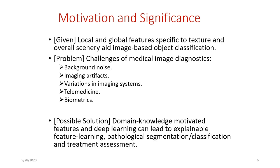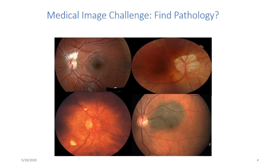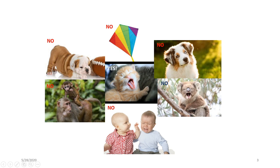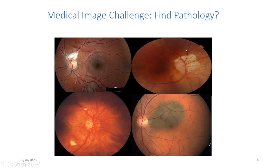So far we've seen that local and global features corresponding to texture and overall scenery help image-based classification. Going back to the cat example: local features are things like the eyes, nose, mouth, and tongue — a face. Global features combine all the textural information from the whole image to confirm yes, this is a cat's face, not a dog's. Deep neural networks combine local and global features together.